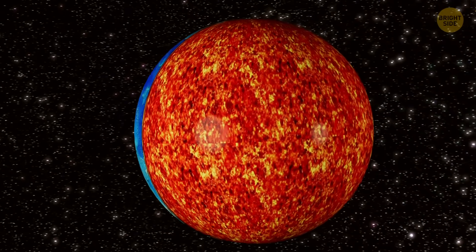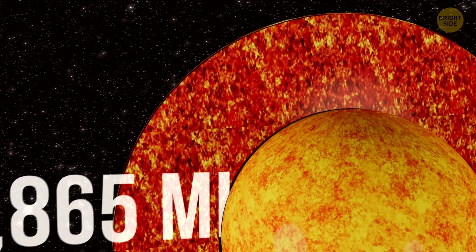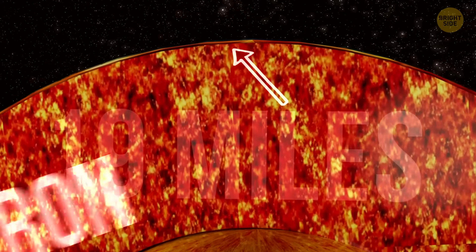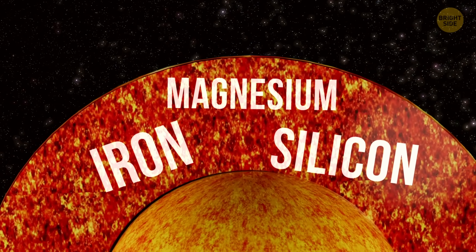The mantle is Earth's thickest layer, stretching almost 1,800 miles deep. It starts just around 19 miles beneath the surface. The mantle is made of iron, magnesium, and silicon. It's dense, hot, and semi-solid.